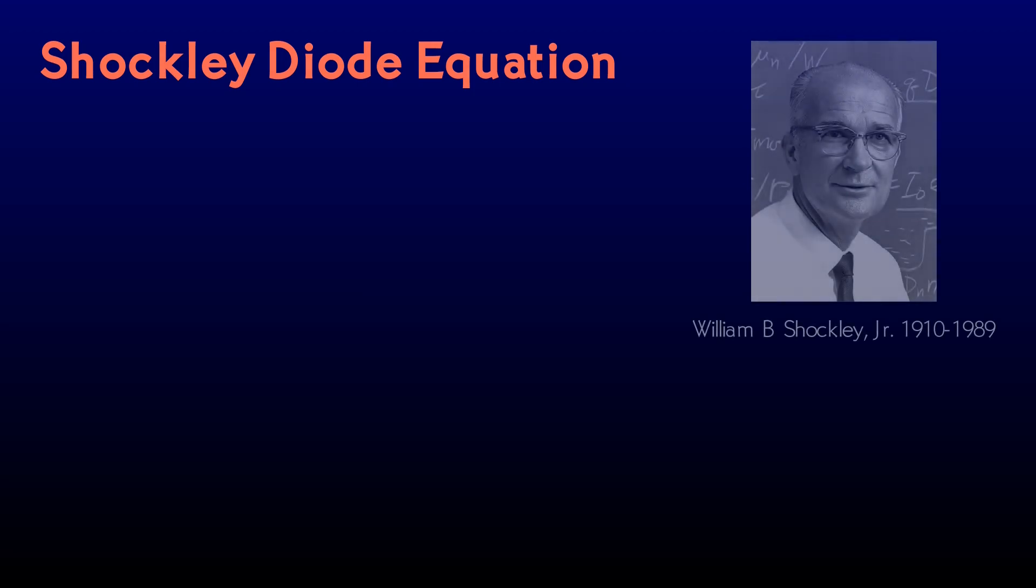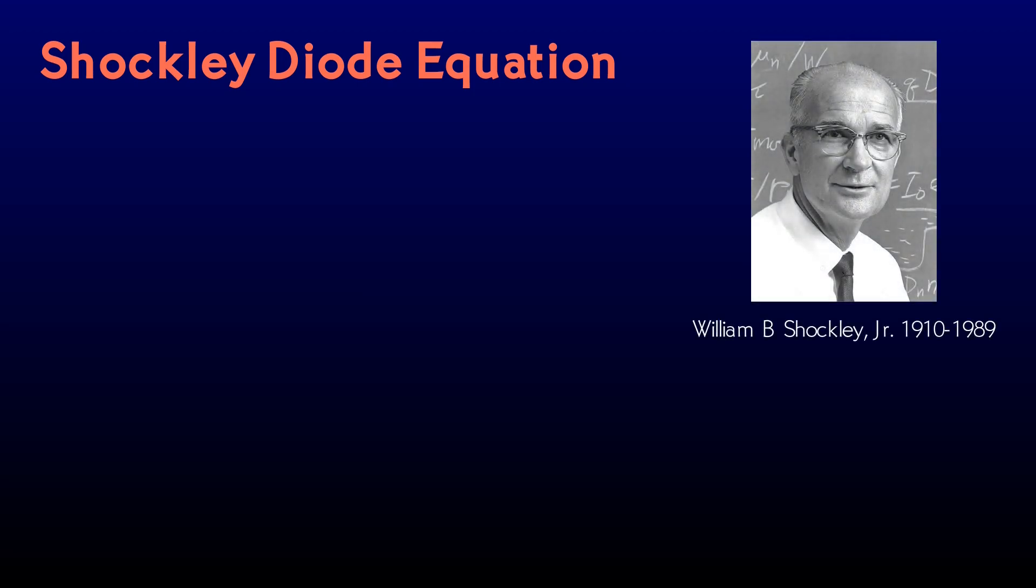The behavior of P-N junction diodes that we've just seen is described by the Shockley diode equation, named for William Shockley, one of the inventors of the transistor. Its form is nearly an exponential. In the equation, I sub D and V sub D are the current through the diode and the voltage across it.